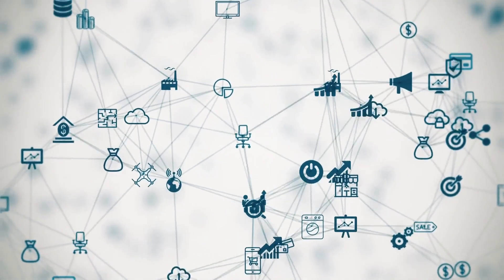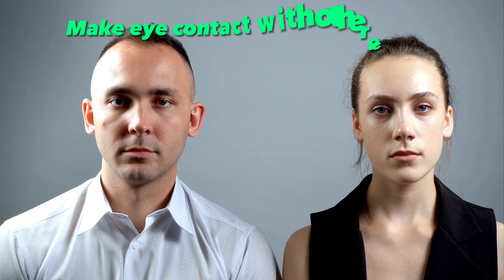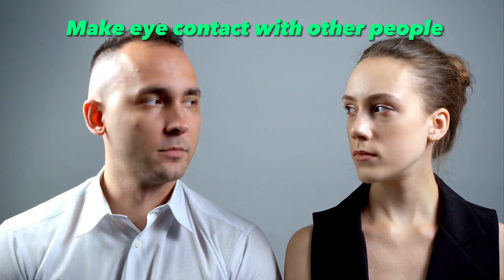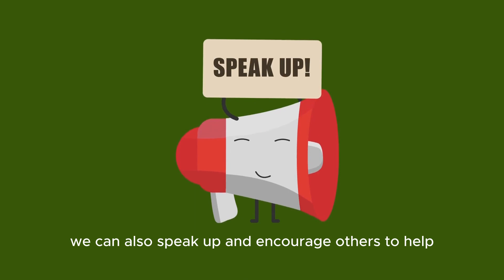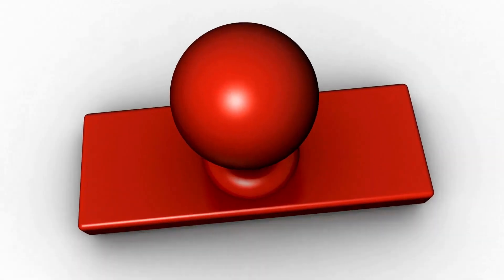There are a number of things we can do to overcome the bystander effect. One thing we can do is to make eye contact with other people in an emergency situation — this can help to break the diffusion of responsibility. We can also speak up and encourage others to help, which will help to reduce social loafing. Finally, we can also be the ones to take action and break this effect.